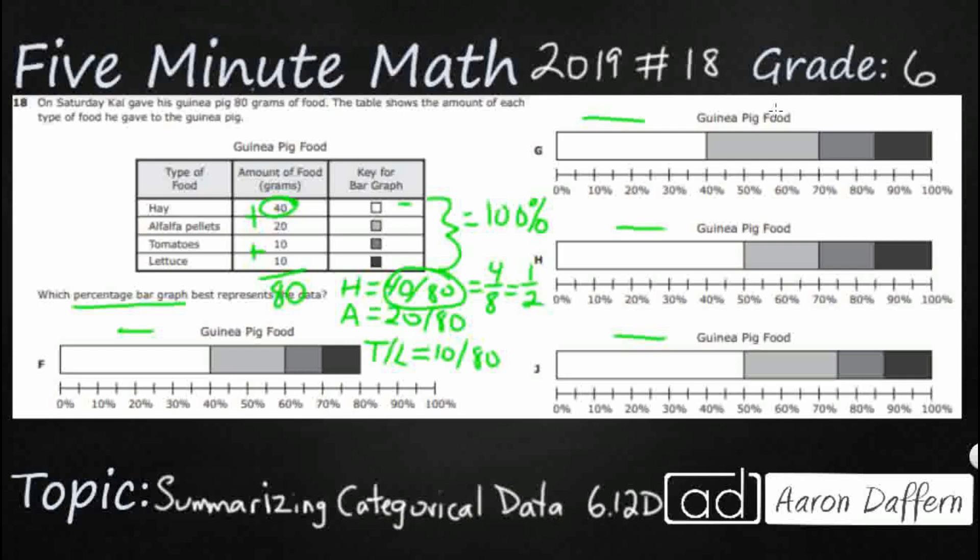Let's go ahead and do the same thing for this alfalfa pellets here. So we're going to take the zeros off, it's going to be 2 over 8 so that's 1/4.